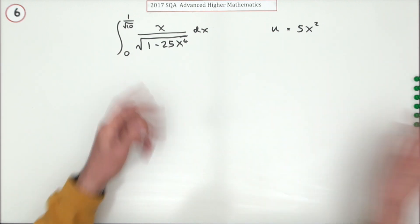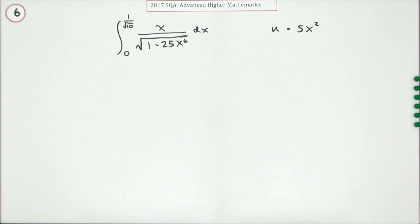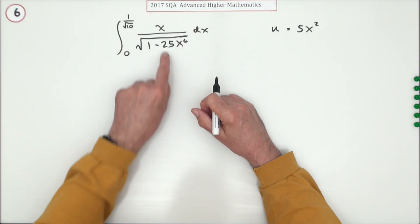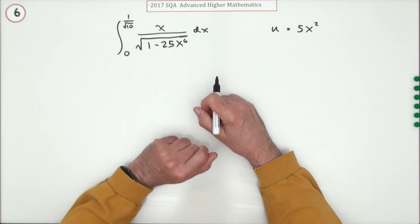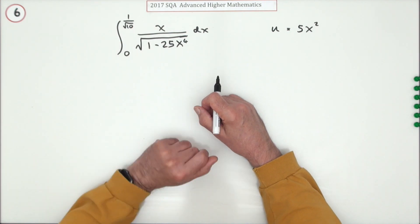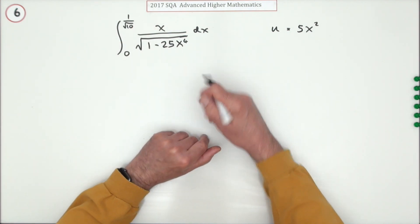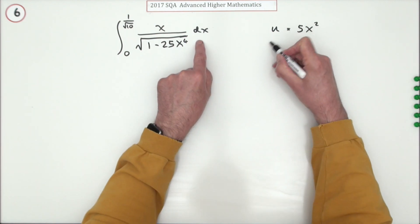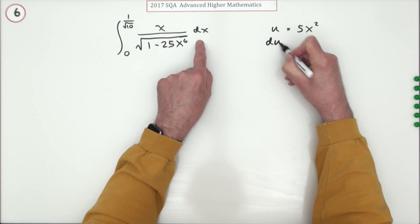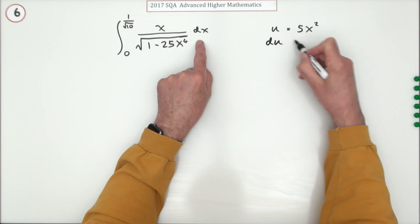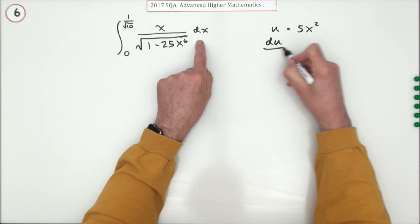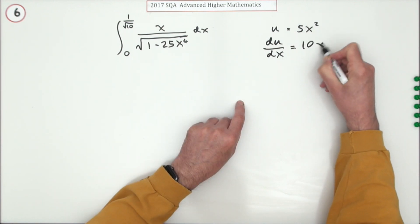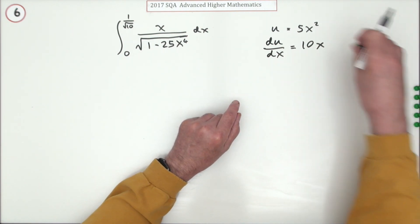You're going to carry out a substitution, which means changing all the bits. This bottom part will be easy to change. I won't change that x because I'm hoping it will get knocked out, but I'll need to change this differential. So du/dx is going to be 10x — and straight away you get a mark just for doing that.